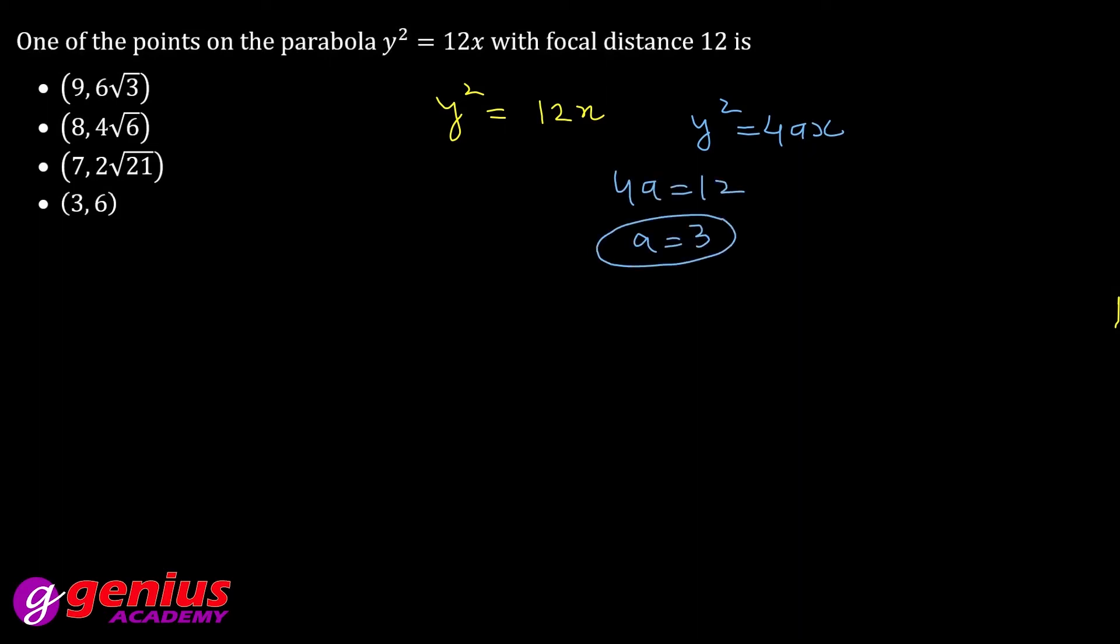According to question, jo focal distance hai woh diya hai 12. Focal distance ka formula hota hai x plus a is equal to 12. X plus a equal to 12, a is equal to 3, so x is equal to 9.